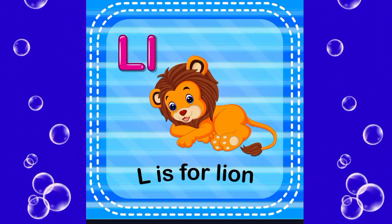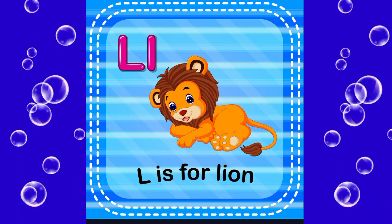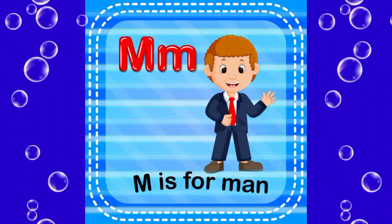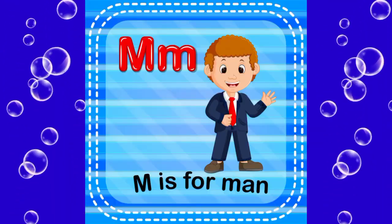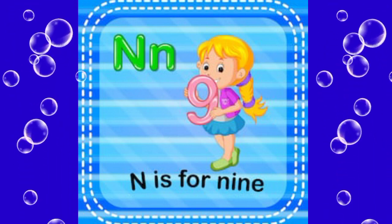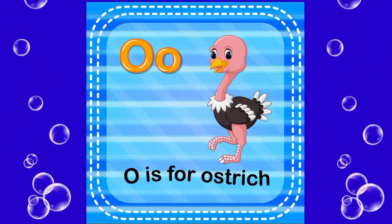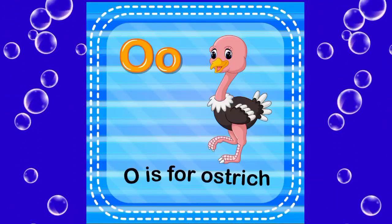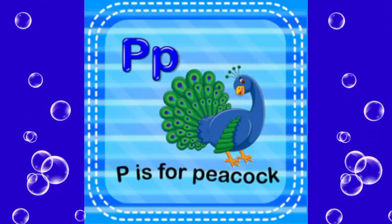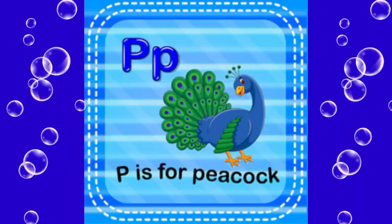N is for lion. M is for man. N is for nine. O is for ostrich. P is for picker.